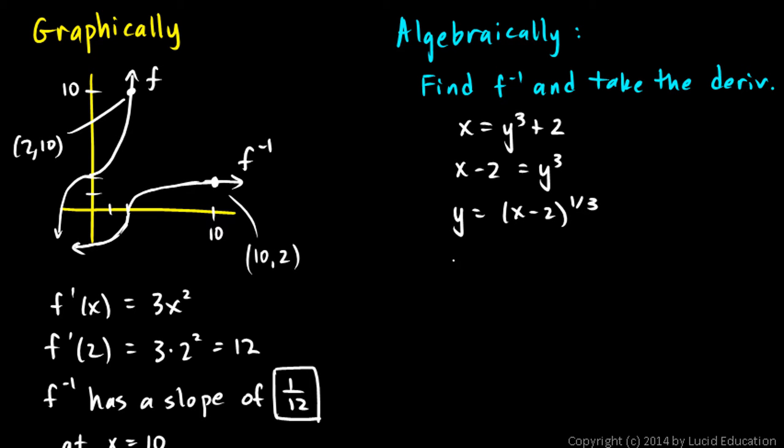So we can find y prime with the power rule and the chain rule. We get 1/3 x minus 2 to the power of negative 2/3 times the derivative of the inner function, which is just 1. So this is our derivative, 1/3 x minus 2 to the negative 2/3.